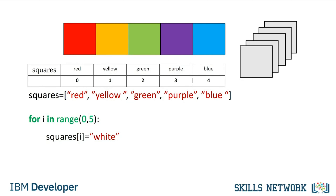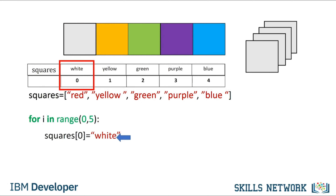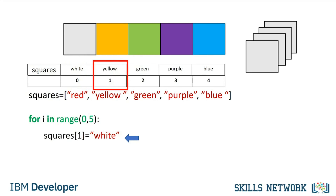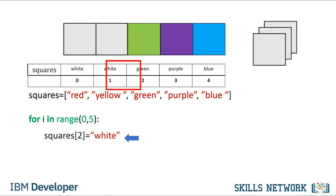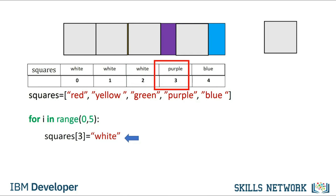The value of i is set to zero. Each iteration of the loop starts at the beginning of the indent. The first element in the list is set to white. We then go to the start of the indent again. When we reach the line to change the value of the list, we set the value of index one to white. The value of i increases by one. We repeat the process for index two, and continue for each index until we have reached the final element.